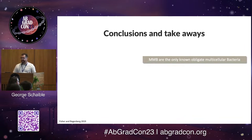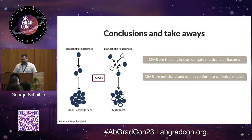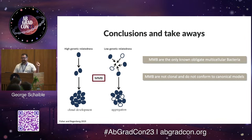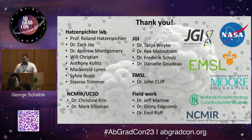In conclusions and takeaways: MMB are the only known obligate multicellular bacteria. They are not clonal and do not conform to canonical ideas of multicellularity — either clonal development or aggregative multicellularity — and seem to fall somewhere in the middle. They also engage in a division of labor as seen with metabolic differentiation. Thank you to the lab and all the collaborators who helped with this.